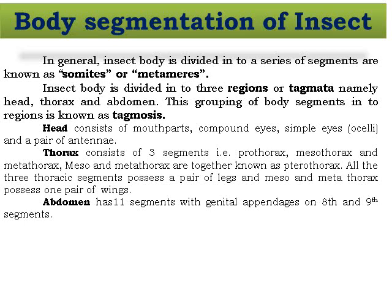The head consists of mouth parts, a pair of compound eyes, simple eyes (that is, the ocelli), and a pair of antennae. The thorax consists of three segments: the prothorax, mesothorax, and metathorax. Meso and metathorax are fused together and known as the pterothorax. All three thoracic segments possess a pair of legs, while meso and metathorax each possess one pair of functional wings — giving two pairs of wings and three pairs of legs as appendages on the thorax.